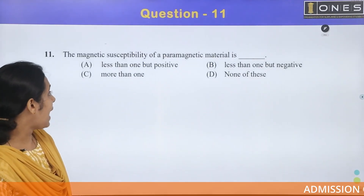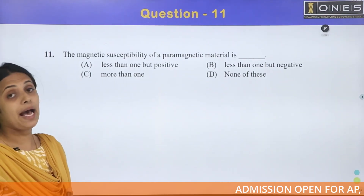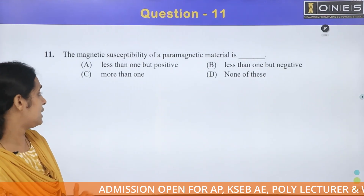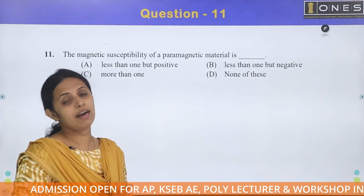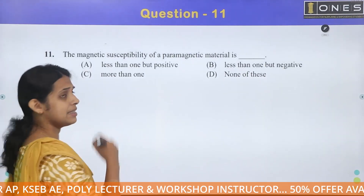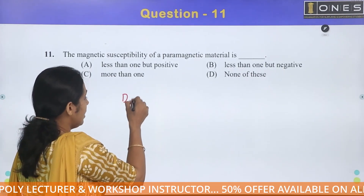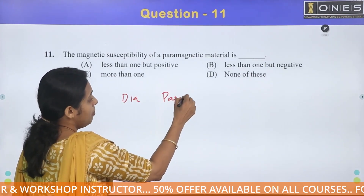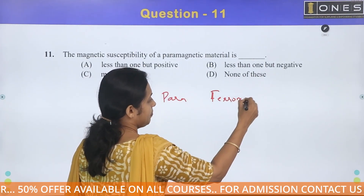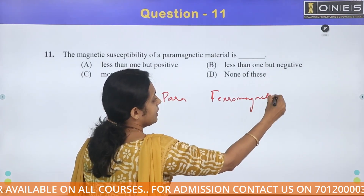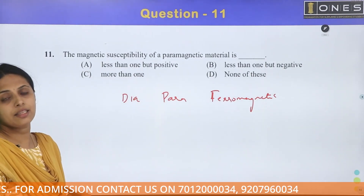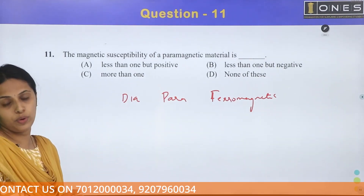Question number 11. The magnetic susceptibility of a paramagnetic material. The main classification of magnetic materials is diamagnetic, paramagnetic, and ferromagnetic. We are classifying the magnetic materials using magnetic fields.